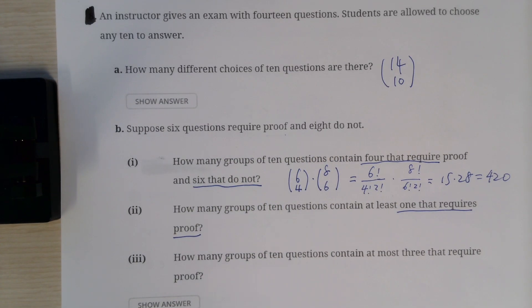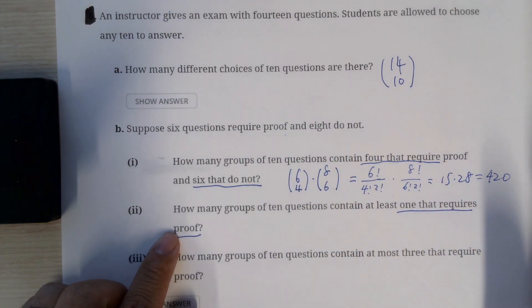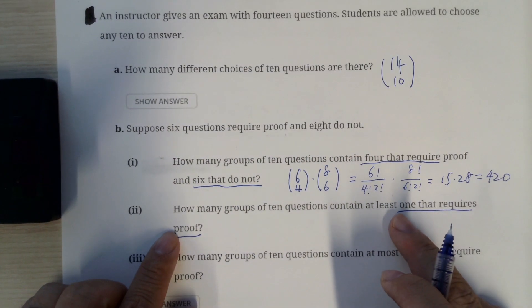Because you only have 8 problems that do not require proof, no matter how you select, do you agree that you're gonna always have at least two questions that require proof? In other words, no matter how you select, you're gonna always fulfill this condition here.